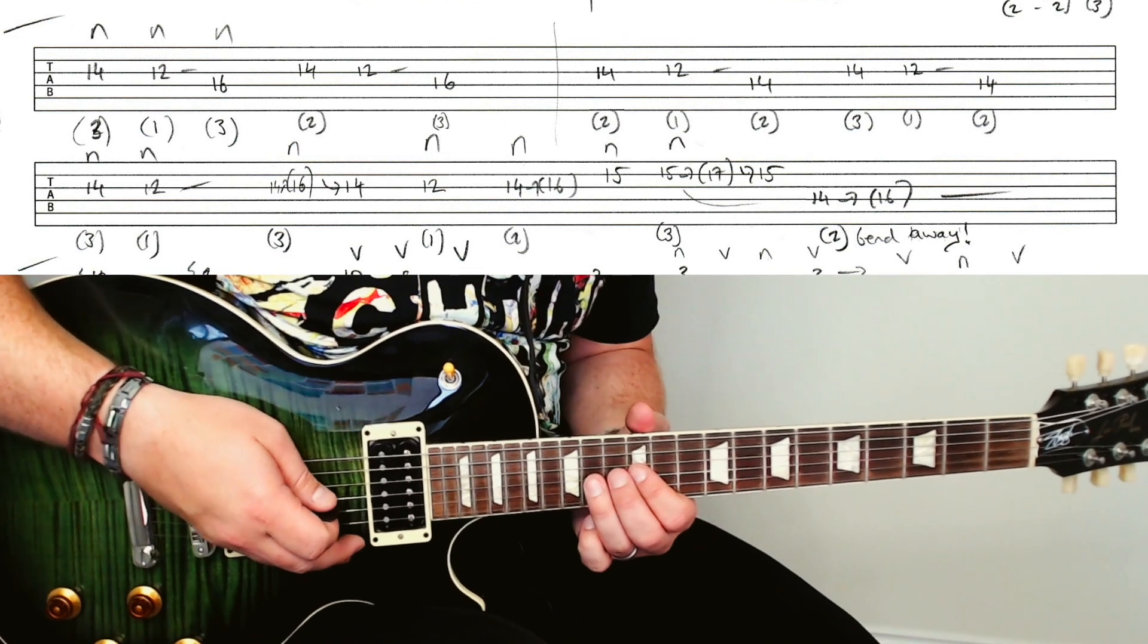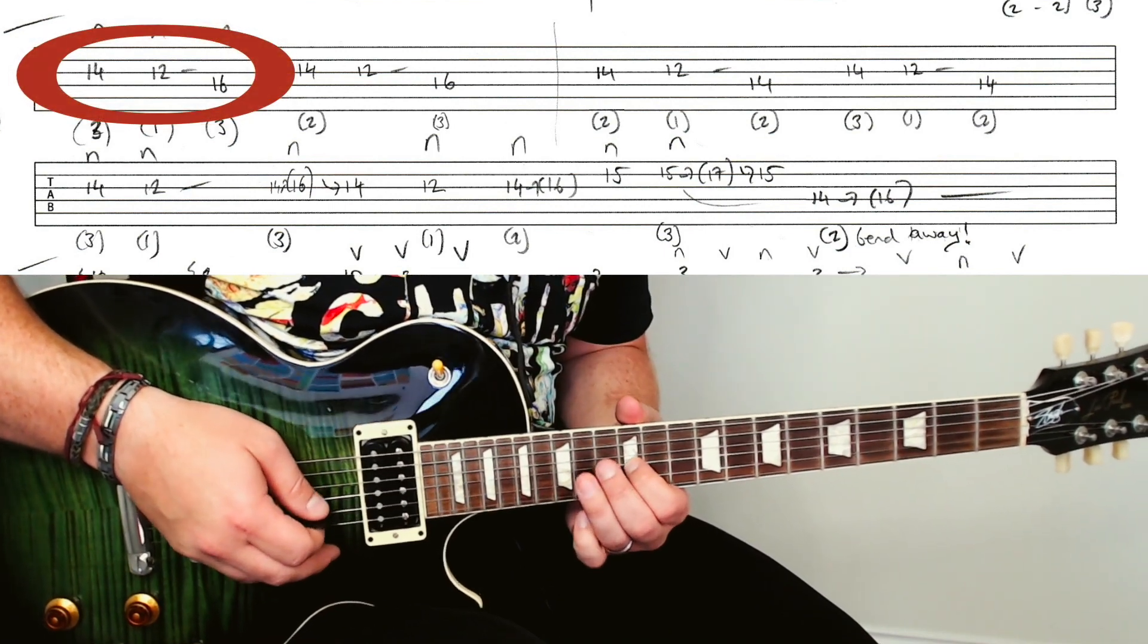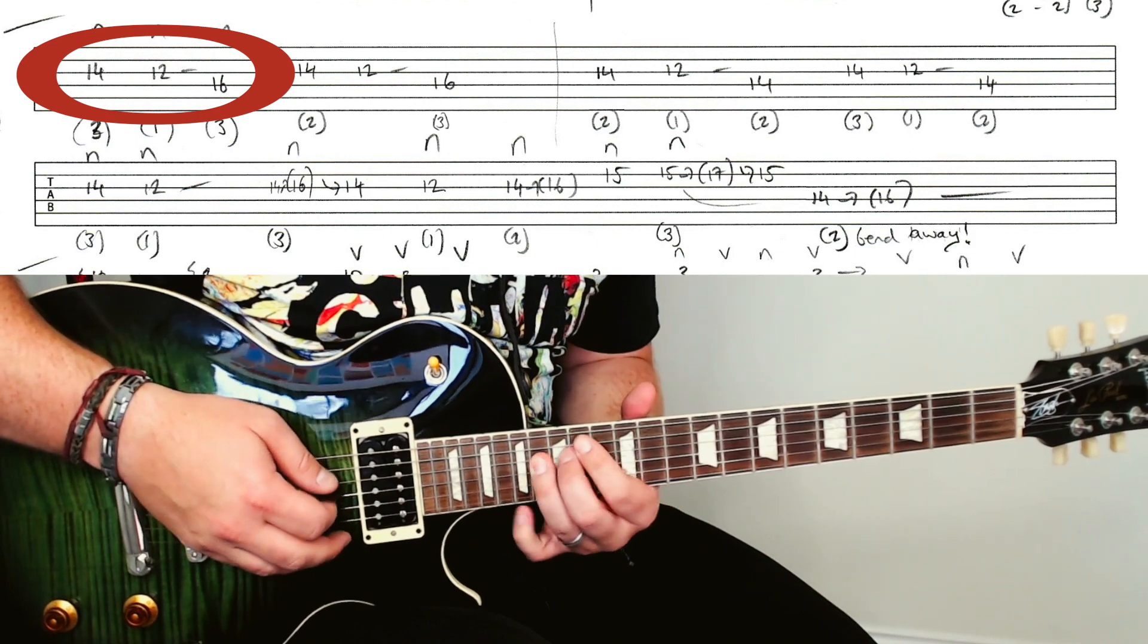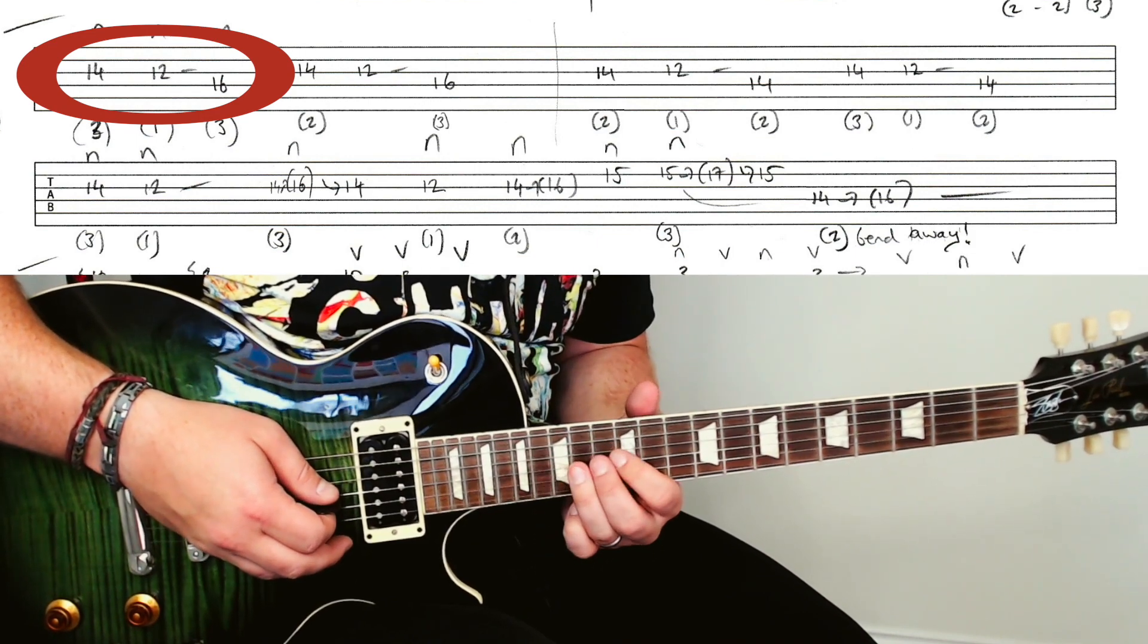So here we go then, 14th fret and you start with the 3rd finger. All down picks. And then you reach up to that 16th fret there.